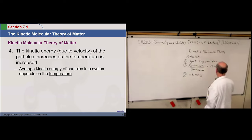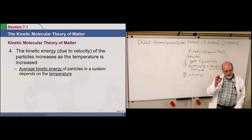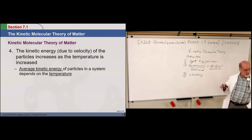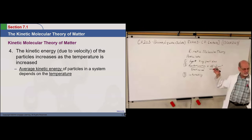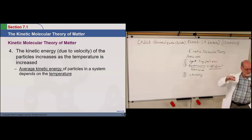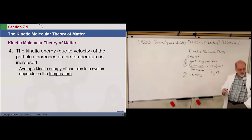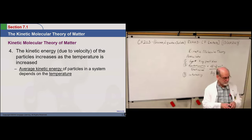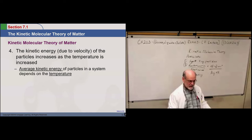Kinetic energy has a relationship to temperature. When you measure the temperature of a substance—in Fahrenheit, Celsius, Kelvin, or Rankine—what you're expressing is the average kinetic energy of the particles in that substance. If the temperature goes up, the average kinetic energy is going up. That's what temperature means on a molecular scale.